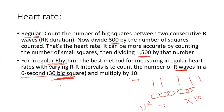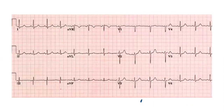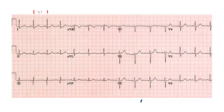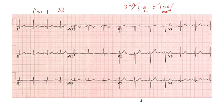In a practical example with a normal rhythm ECG, counting the large boxes between two R waves gives three large boxes plus two small boxes — that is 3.2. Dividing 300 by 3.2 gives approximately 100 beats per minute, so this ECG shows a heart rate of 100 beats per minute.